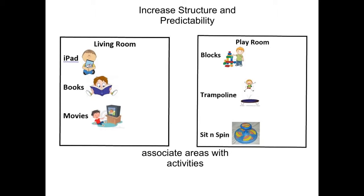Label rooms by their use. For example, make a poster that says 'living room' and hang it there with the items that will be located in the living room. Or a poster for a playroom with items such as blocks, trampolines, and sit and spin that will be located only in the playroom.